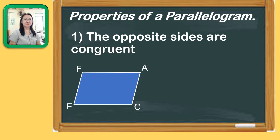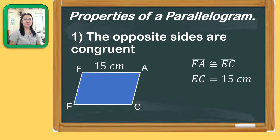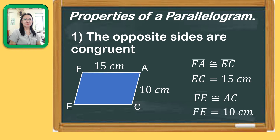Using this property, if the length measure of FA is 15 centimeters, and side FA is congruent to EC, then EC is equal to 15 centimeters. However, if the length of side AC is 10 centimeters, and FE is congruent to AC, then we can say that side FE is also 10 centimeters.